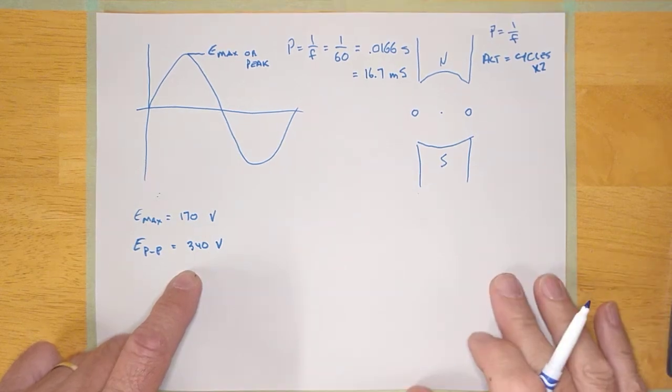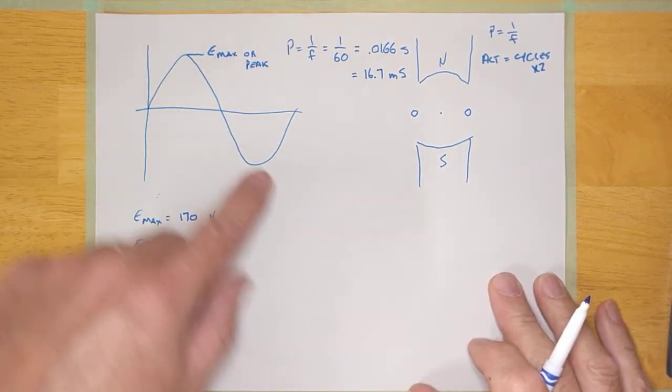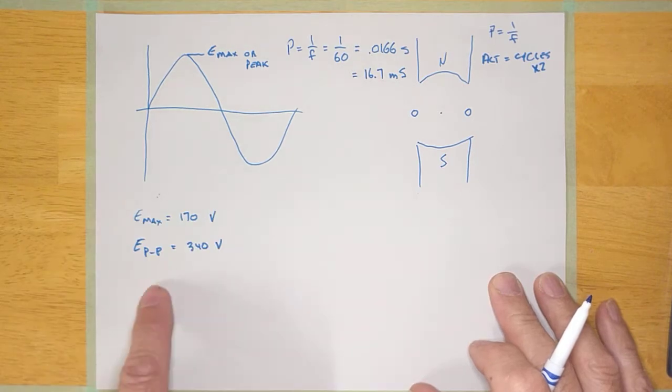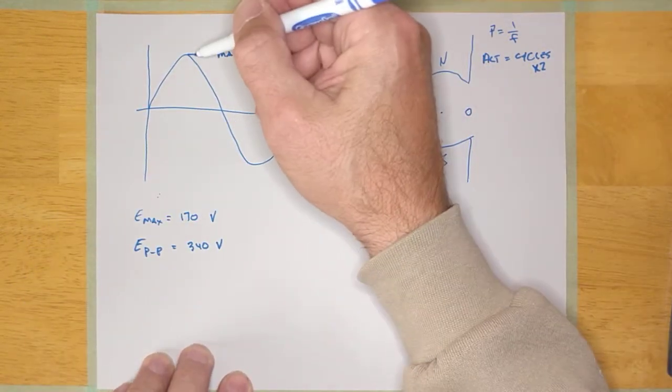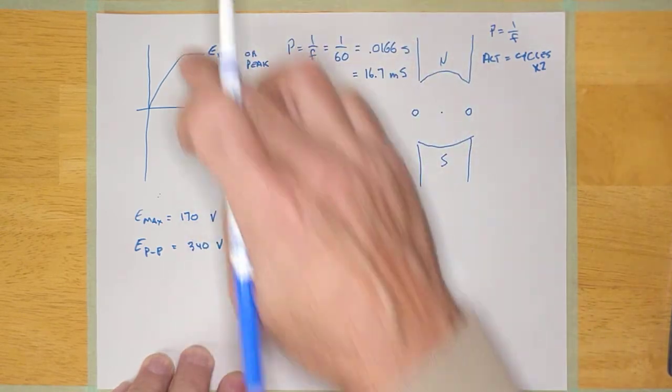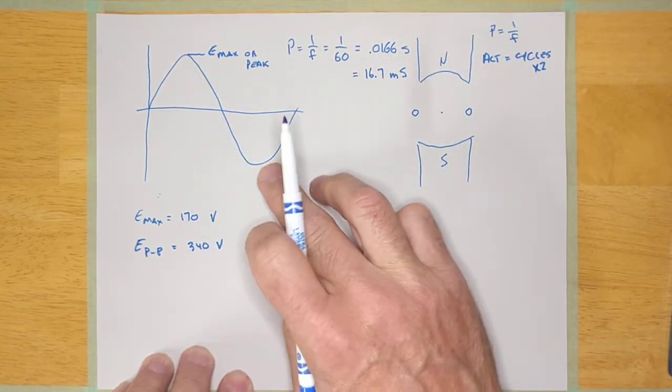Hey guys, welcome back. We're going to continue on with the AC sine wave here. We just discussed the peak voltage and the peak-to-peak voltage, and I've got this little example here where our peak voltage is 170 and our peak-to-peak voltage is 340 volts.